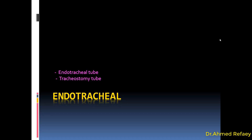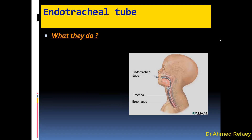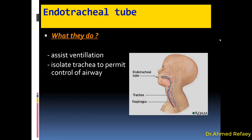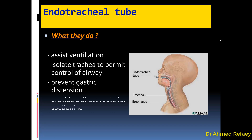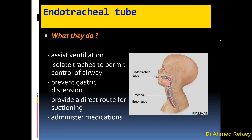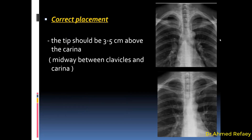Starting today with the endotracheal tube — in the next episodes I will cover the other devices. Endotracheal tubes can be one of two things: either an endotracheal tube or a tracheostomy tube. Starting with the endotracheal tube: what they do — they assist ventilation, isolate the trachea to permit control of the airway, prevent gastric distension, and provide a direct route for suctioning as well as administration of some medications. The correct placement of the endotracheal tube tip should be three to five centimeters above the carina.